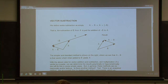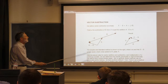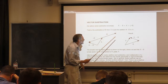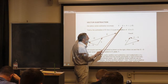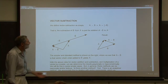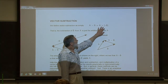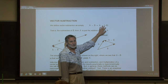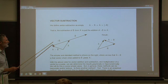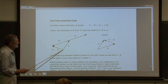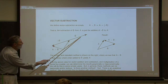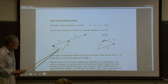We need to deal with subtraction. We define A minus B as the sum of A plus (minus B). We know what addition is and we've defined multiplying by a scalar, so this is something we can handle. When you want to subtract B from A, you start with A, flip B, and then add A to minus B.